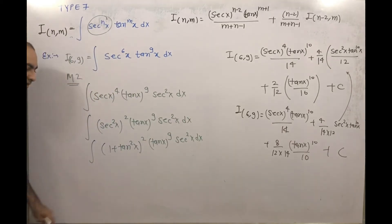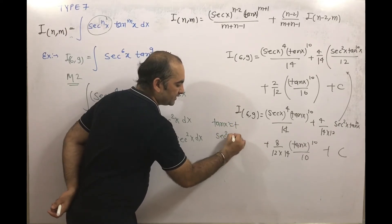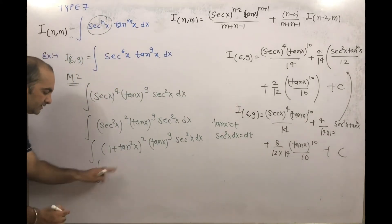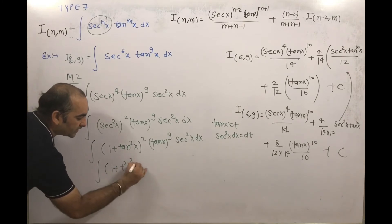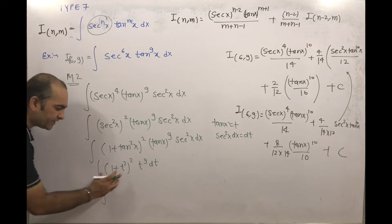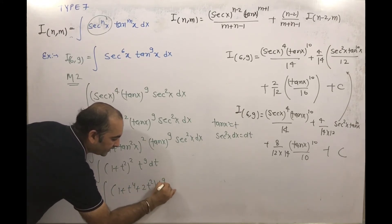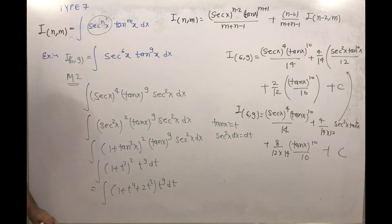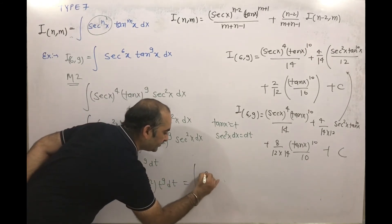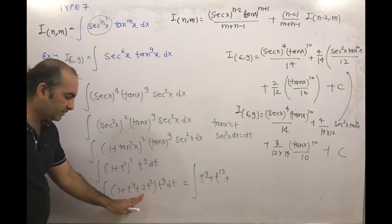So this will come: integration of 1 plus tan squared x whole squared into tan x to the power 9 into secant squared x dx. Here we take tan x equal to t, then secant squared x dx will be dt. So this integration becomes integration of 1 plus t squared whole squared into t to the power 9 dt. Expanding: 1 plus t to the power 4 plus 2t squared, into t to the power 9, dt. So we get integration of t power 9 plus t power 13 plus 2 times t power 11 dt.